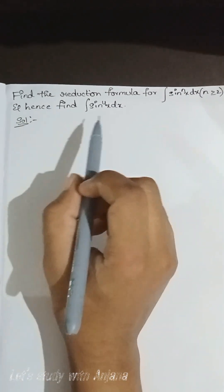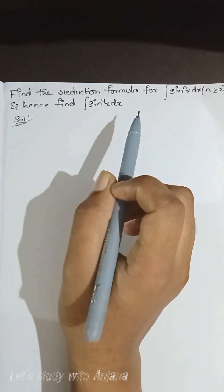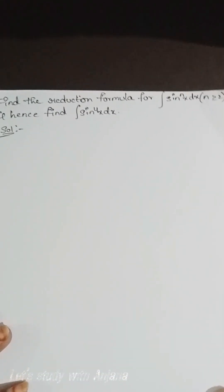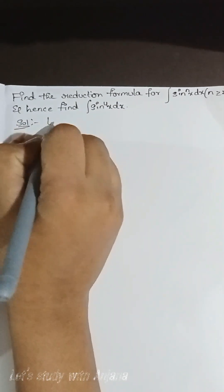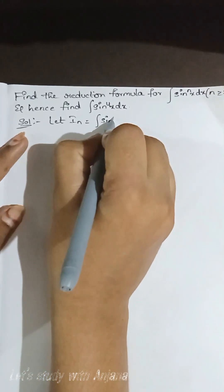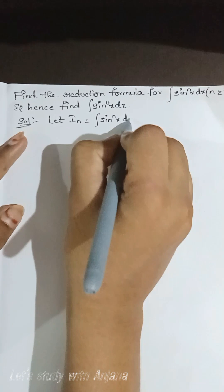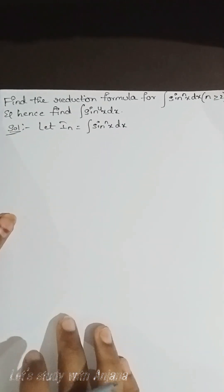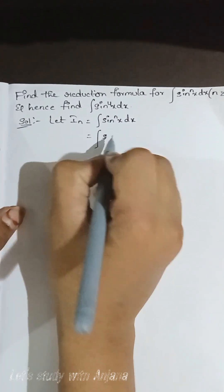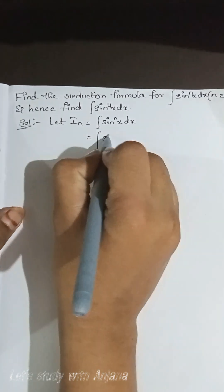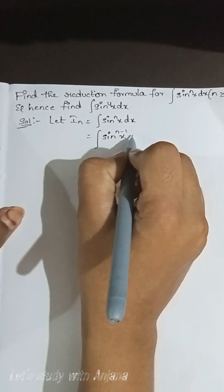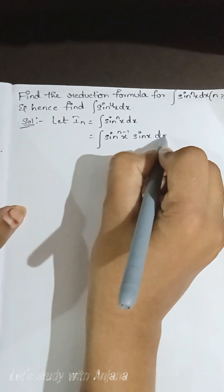Find the reduction formula for the integral of sin^n(x) dx. Let In be equal to the integral of sin^n(x) dx. We write sin^n(x) as sin^(n-1)(x) into sin(x) dx.